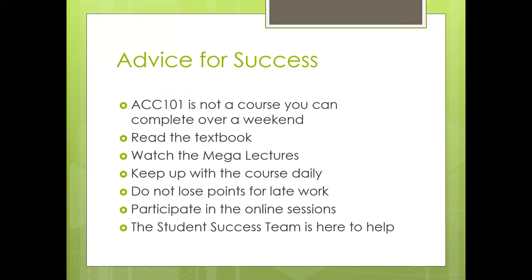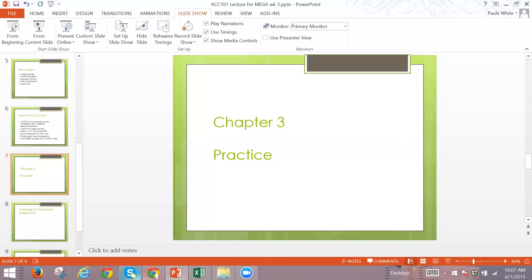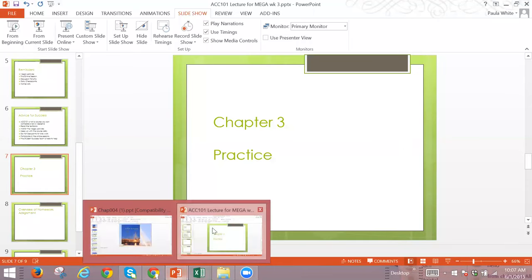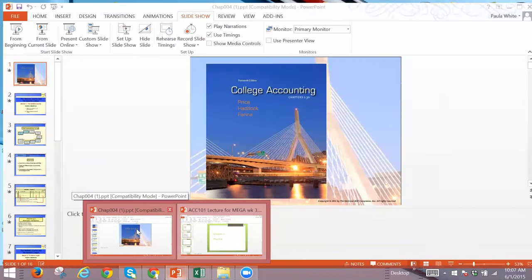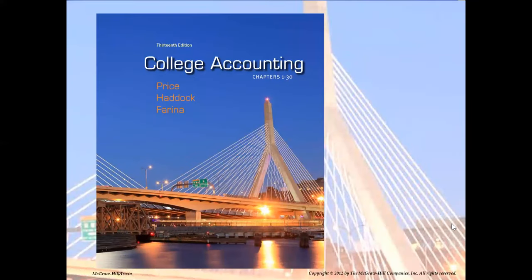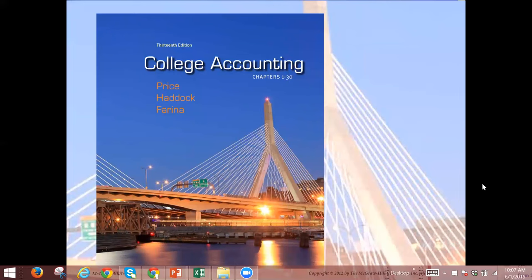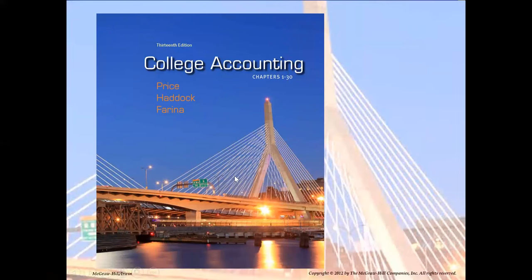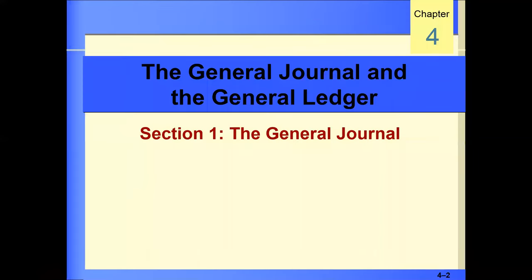Keep up with the work daily, participate in these online sessions, and remember the student success team is here to help you. Let's start with Chapter 4 — I know I said Chapter 3, but today is Chapter 4. Today we're going to introduce the general journal and the general ledger. If you have questions at any time, please type them in and I'll stop and answer them, because if you have a question, everyone listening probably has the same one.